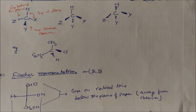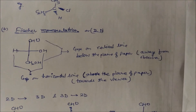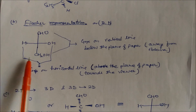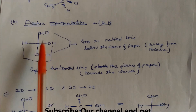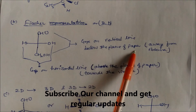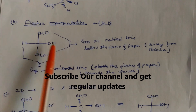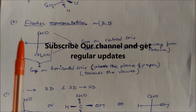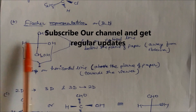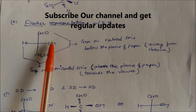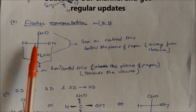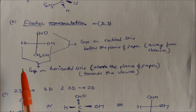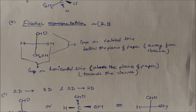The second representation is the Fischer projection. In this representation, CHO and CH2OH are on the vertical line, written below the plane of the paper — away from the observer. Hydrogen and OH are along the horizontal line — above the plane of the paper, toward the observer. So OH and hydrogen are above the plane while CHO and CH2OH go down and are away from the observer.